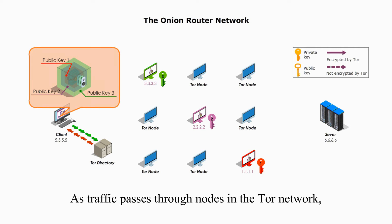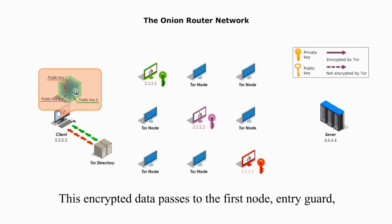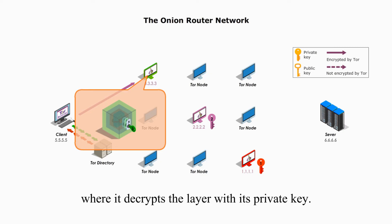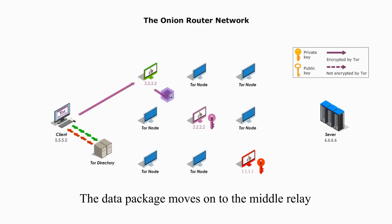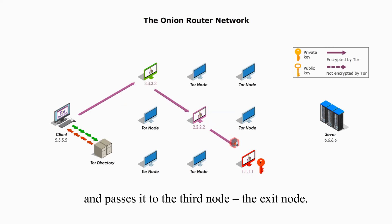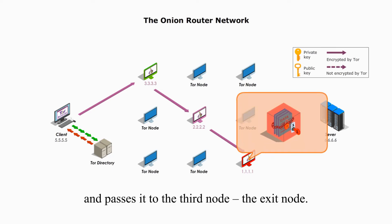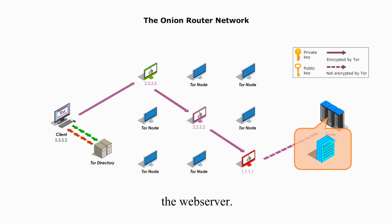As traffic passes through the nodes in the Tor network, a layer of encryption is stripped off at each node, much like peeling layers of an onion. This encrypted data passes to the first node, Entry Guard, where it decrypts the layer with its private key, revealing the next node's IP address. The data package moves on to the Middle Relay, which peels the second encrypted layer with its private key, revealing the next node IP address, and passes it to the third node, the Exit node. The Exit node decrypts its layer, which contains the IP address to the final destination, the web server. From the Exit node to the web server, the traffic is not encrypted by the Tor network.